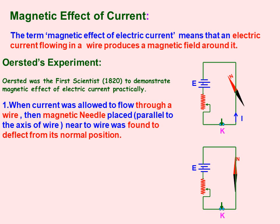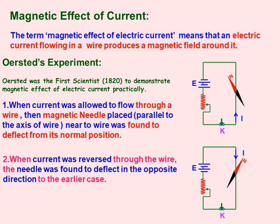When the key is closed and current goes from one end to the other, the magnetic needle is deflected in one direction. When the current direction is reversed, the magnetic needle deflects in the opposite direction. Oersted was the first scientist to demonstrate the magnetic effect of electric current practically. Initially, when current was allowed to flow, the magnetic needle placed parallel to the axis of the wire was found to deflect from its normal position.